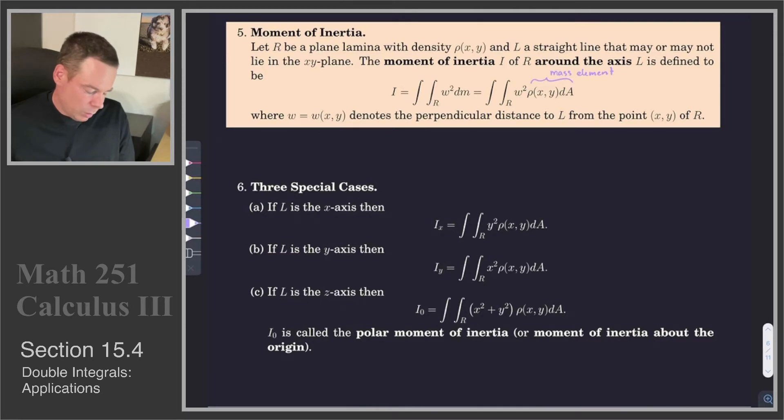The moment of inertia about the y-axis is given by I sub y, and it's the integral of x² ρ(x,y), and then we've also got our moment of inertia about the z-axis, or what we call our polar moment of inertia.